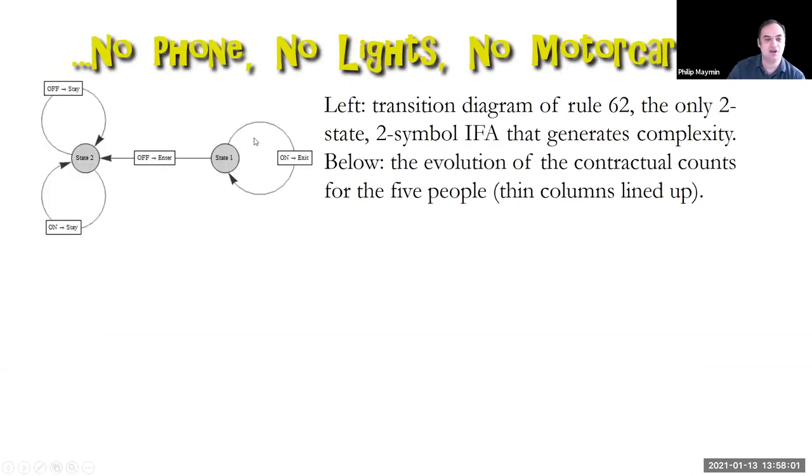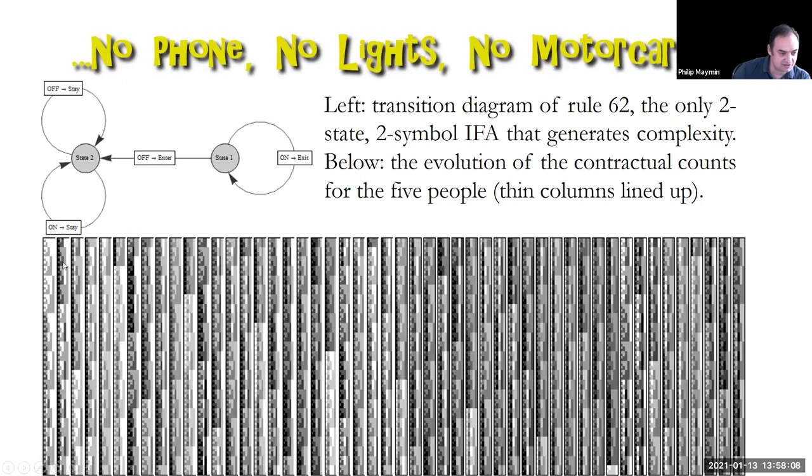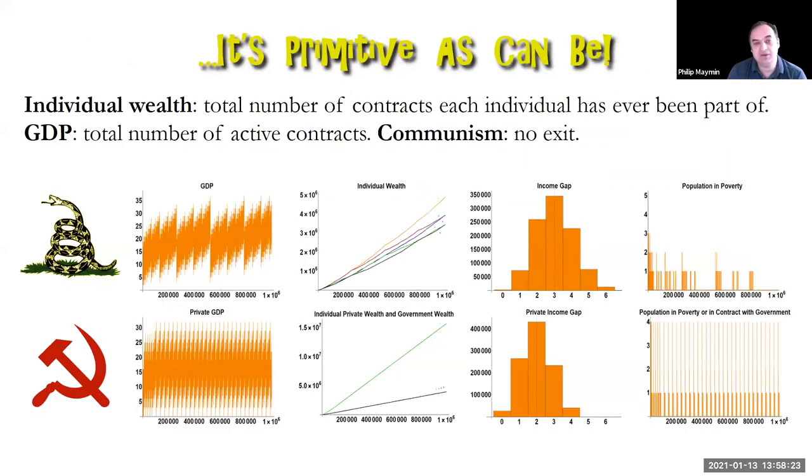That is the only complex one. It looks like this. We won't go through it, but it's the same iterated finite automaton. And here, each column goes to here and then starts at the top again. You can see the evolution is complex. You see, you know it when you see it. So this is the minimal model of economic complexity. Fine. Now what? Now let's introduce communism again. So how do we measure wealth?